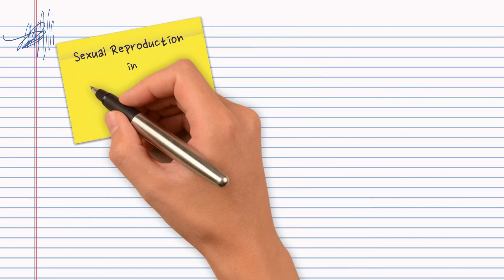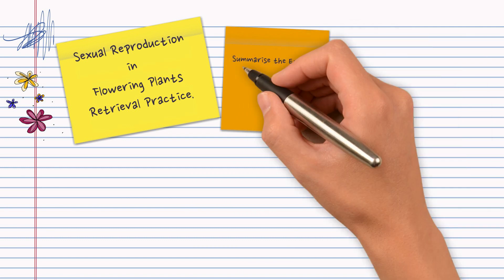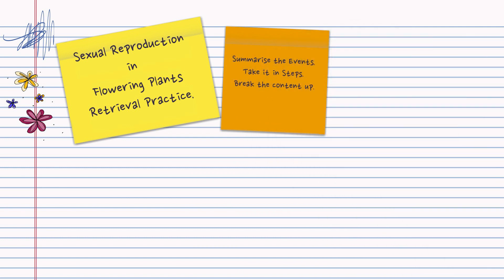This video is to help you piece together sexual reproduction in flowering plants, so it's part of retrieval practice, it's a revision video. You have to watch the other videos to know the content, this is to piece it all together or to revise it. So we're going to summarize the events, break it up into stages and tell the story.